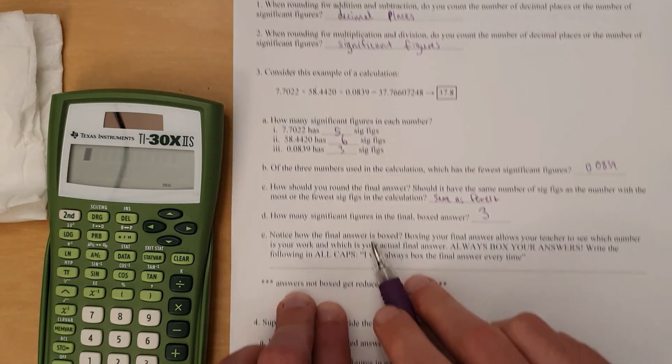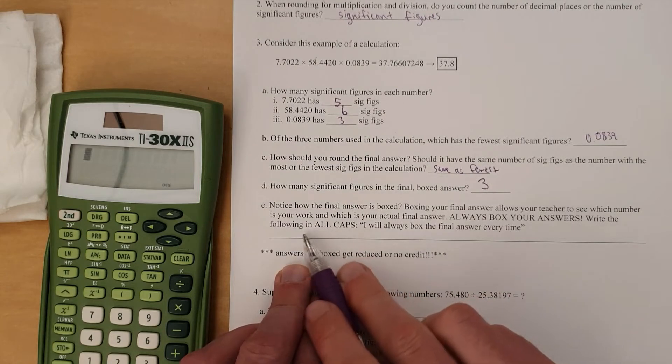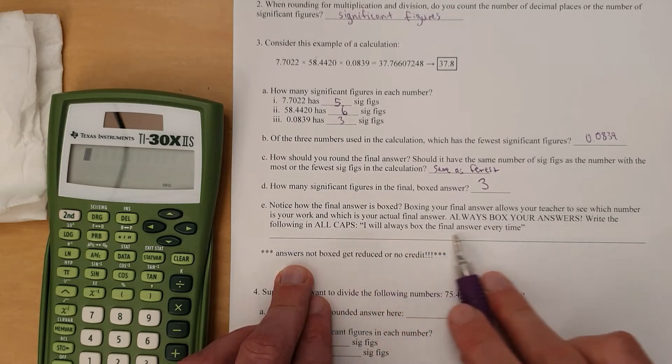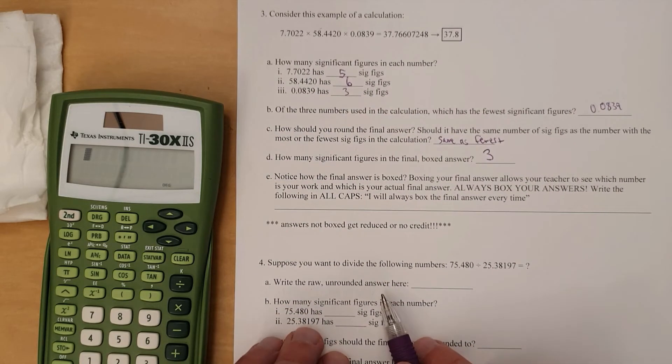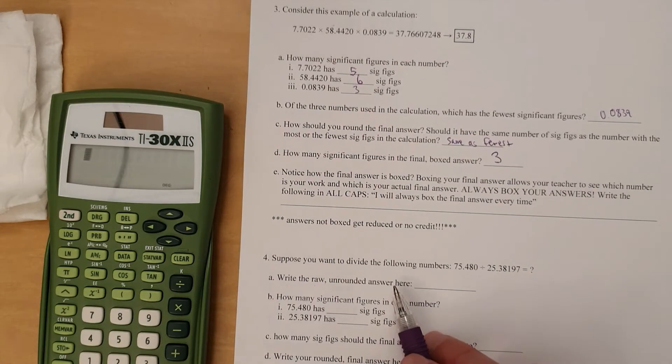Notice how the final answer is boxed. Make sure you do, indeed. So write out that I will always box the final answer every time, using all capital letters. And then we can move on to looking at what you should get for here.